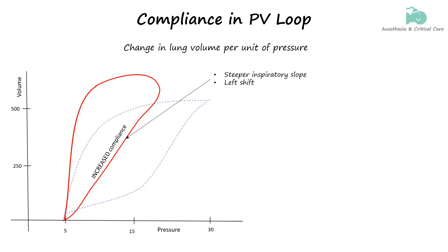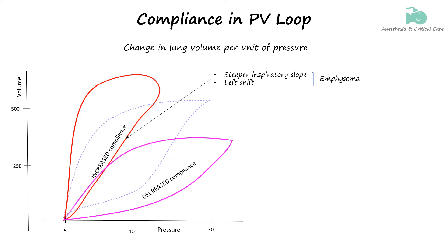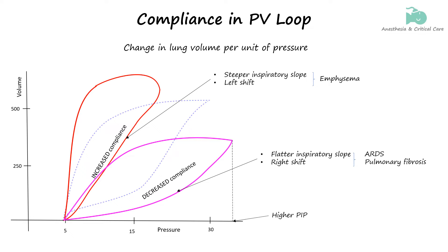This means the lungs are more easily inflated with less pressure, as the lung tissue is more elastic. On the other hand, decreased compliance seen in conditions like ARDS or pulmonary fibrosis results in a flatter inspiratory slope, shifting the pressure-volume loop to the right. The lungs are stiffer, requiring higher pressure to achieve the same increase in lung volume, often associated with a higher peak inspiratory pressure and a risk of lung injury.